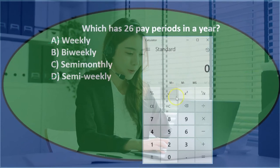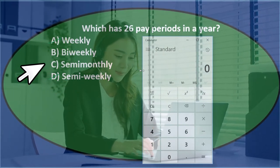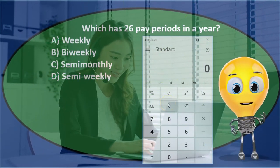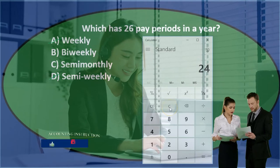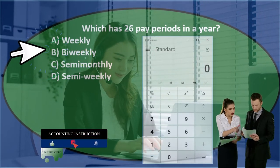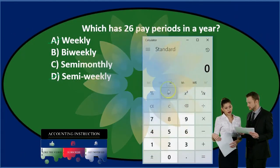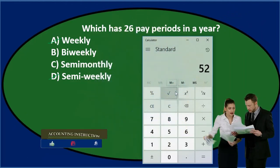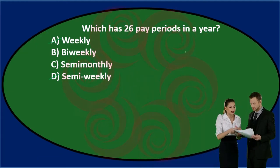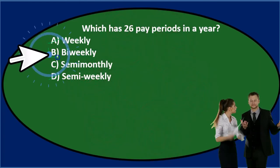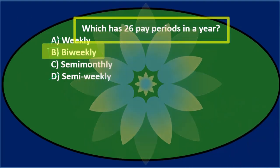Semi-monthly would be twice a month — paid on like the 15th and the 30th. That's 12 months times two, which is 24 pay periods. Whereas bi-weekly means every two weeks — not necessarily on the 15th or 30th, not limited to two pay periods per month. Think of it as 52 weeks divided by two, which gives us 26. There are actually more pay periods when paid bi-weekly than semi-monthly. So B is the correct answer — which has 26 pay periods in a year? B: bi-weekly.